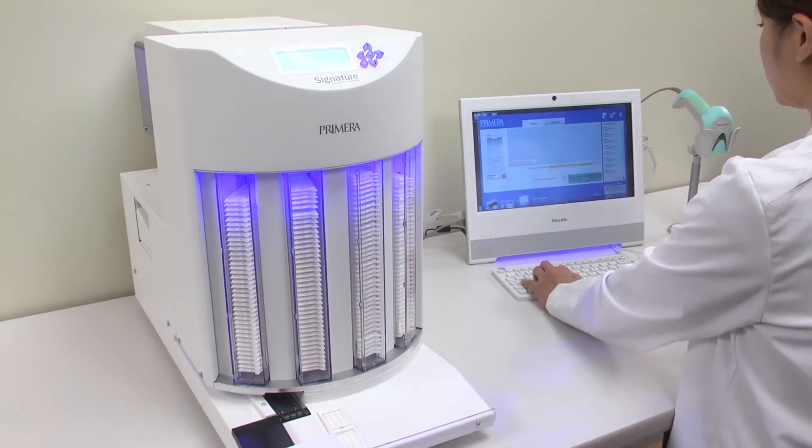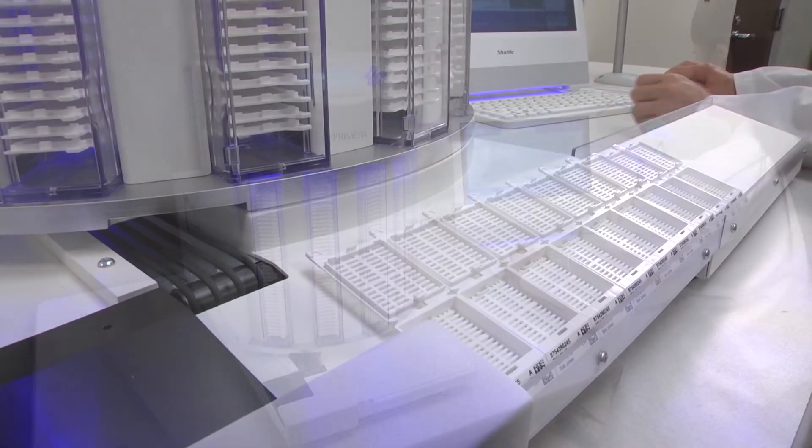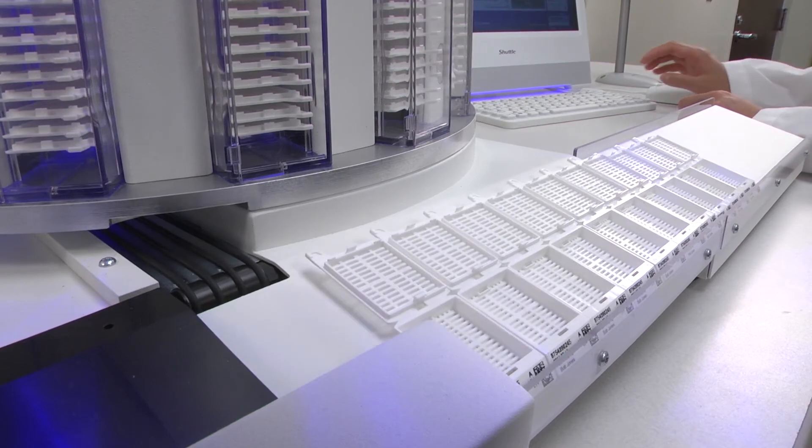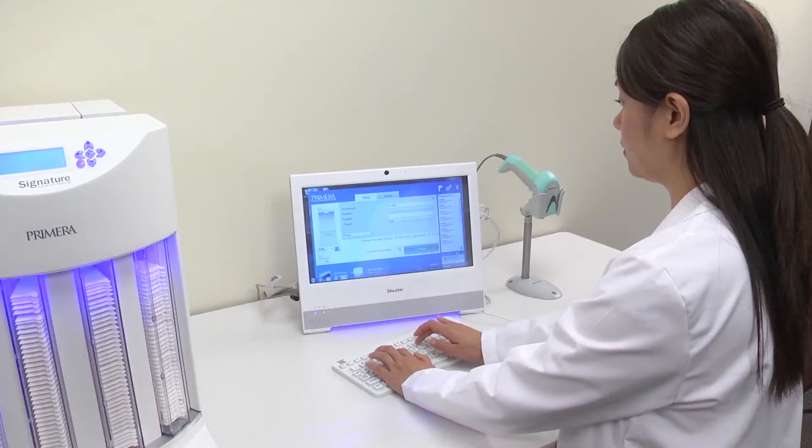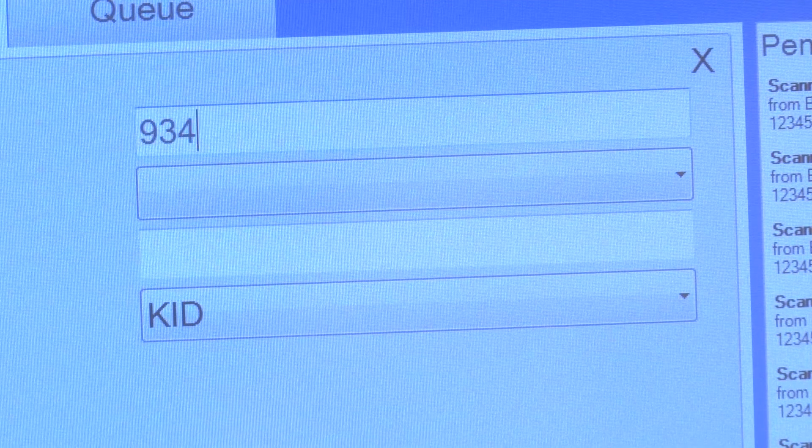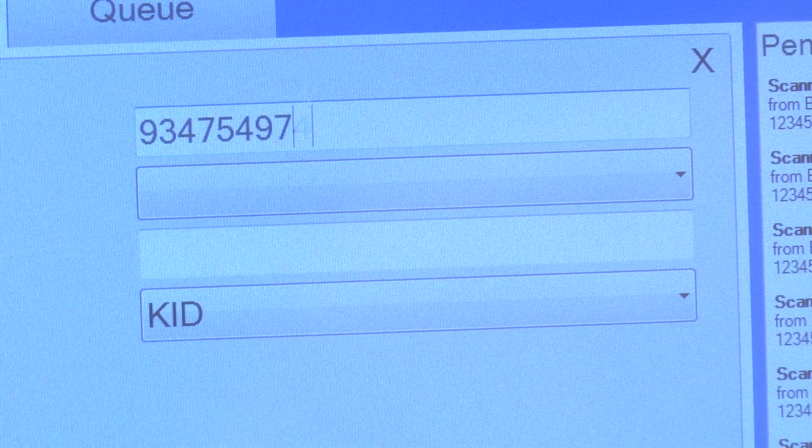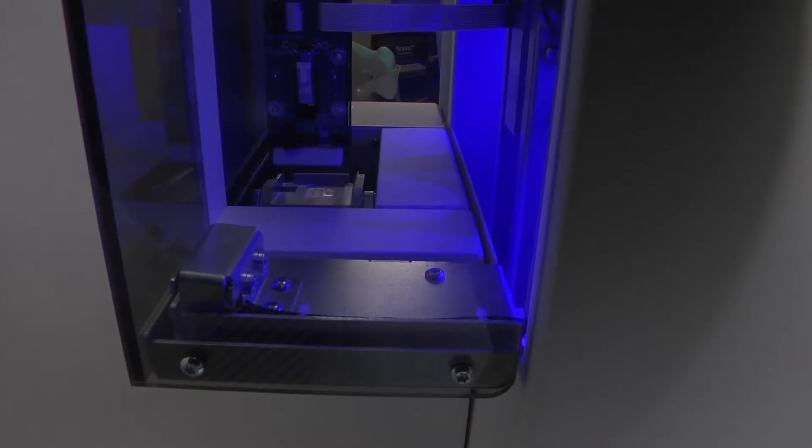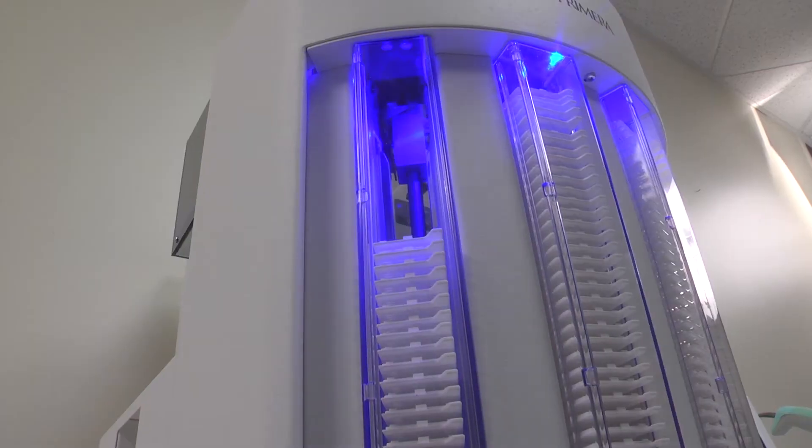Primera's new signature cassette printer prints directly onto tissue cassettes. It not only helps to increase efficiency but also to eliminate handwriting reducing the possibility of errors. Signature cassette printer is available in both a manual feed version as well as a fully automated robotic feed system.